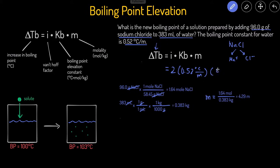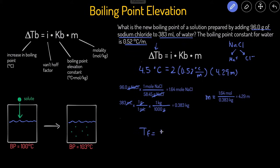Inputting 4.29 molal for m, we now have i, Kb, and m. Multiplying these together gives 4.46 degrees Celsius, or rounding to two sig figs, 4.5 degrees Celsius. So the boiling point has increased by 4.5 degrees Celsius. The final boiling point equals the original boiling point of water (100°C) plus the change (4.5°C), giving a new boiling point of 104.5 degrees Celsius.